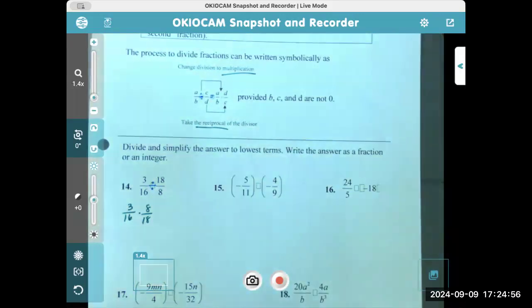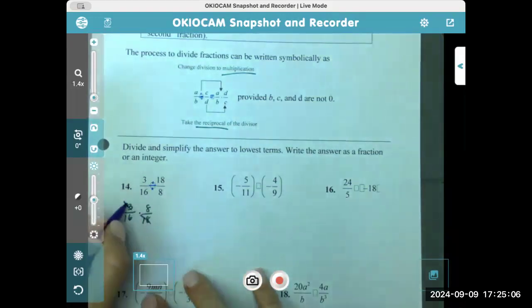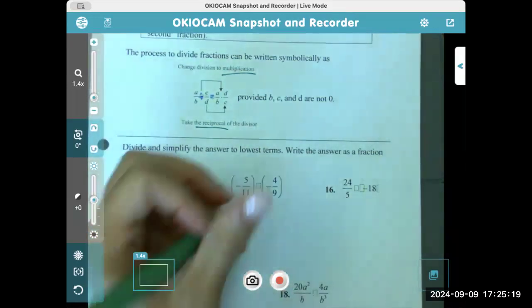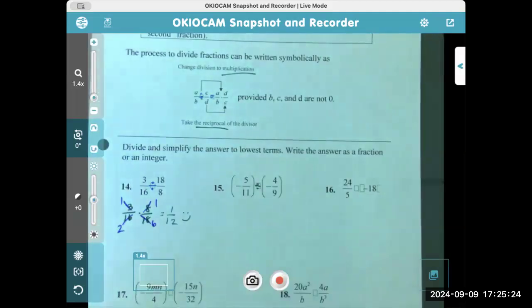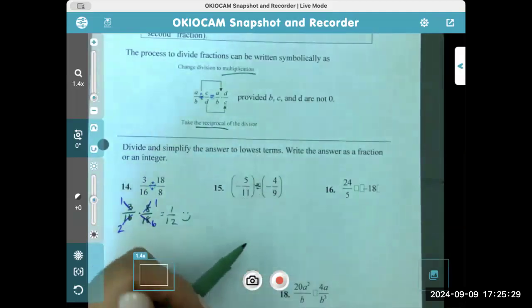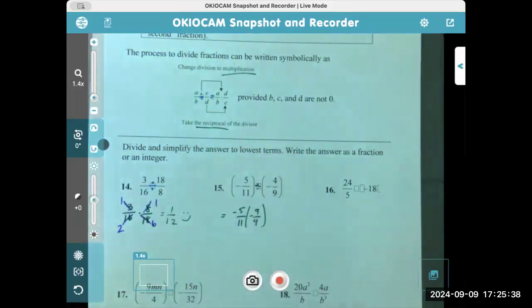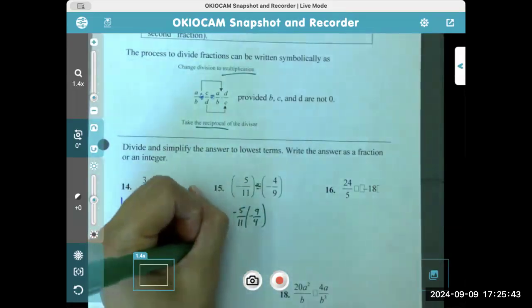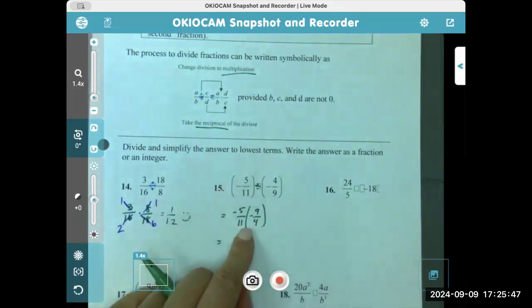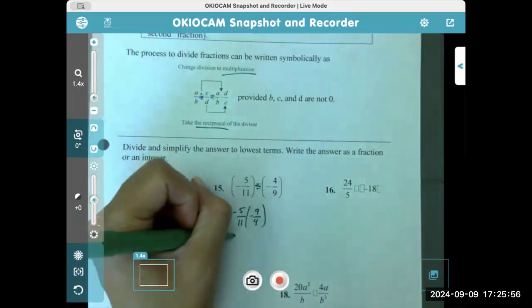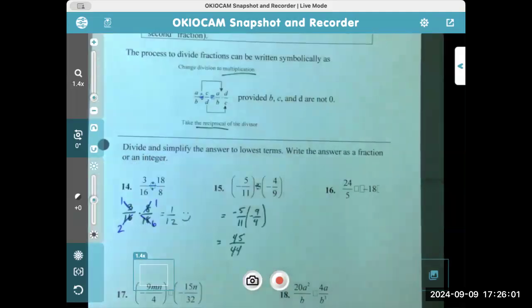So three sixteenths times eight eighteenths is now what we want, because we want to multiply it by the reciprocal of the second fraction. Again, I like to reduce before I actually do the multiplication, but you do you. So three goes into eighteen six times, eight goes into sixteen two times. So these are ones. So thus we're just left with one twelfth. So negative five elevenths divided by negative four ninths. Again, we still have the double negative, which means we have a positive in the end. But we now have, instead of division, the multiplication of negative five elevenths times negative nine fourths. Okay, so now I look five cannot go into four, nine cannot go into eleven, and five can't go into eleven, nine not into four. So we just multiply across. Remember negative times the negative is positive. Five times nine is 45. Eleven times four is 44. Perfect.